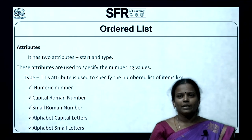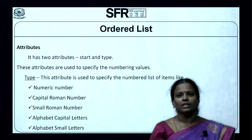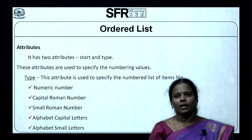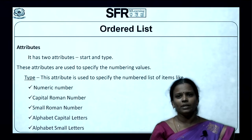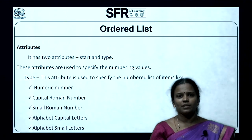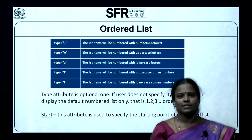Now let us see the attributes of Ordered List. It has two attributes: Start and Type Attribute. These attributes are used to specify the numbering values. The Type Attribute is used to specify the numbered list of items, such as Numeric Number, Capital Roman Number, Small Roman Number, Alphabet Capital Letters, and Alphabet Small Letters.